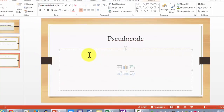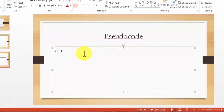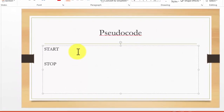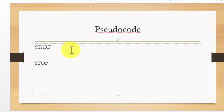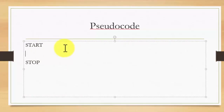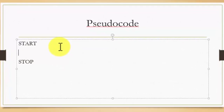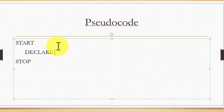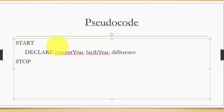In the pseudocode, just like a flowchart, I'm going to include start and stop logic. I need three variables total — two for input and one for output. All pseudocode statements must start with action verbs, so I'll start with the declare statement. I'll have current year — remember, no spaces in variable names, so it's written as one word using camel casing — and birth year, plus the difference variable.